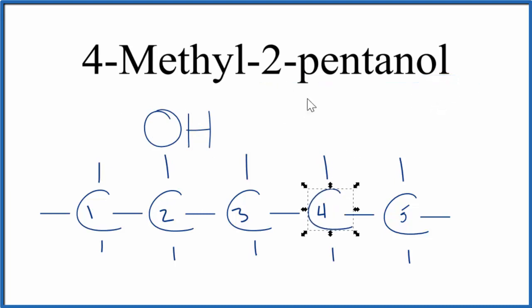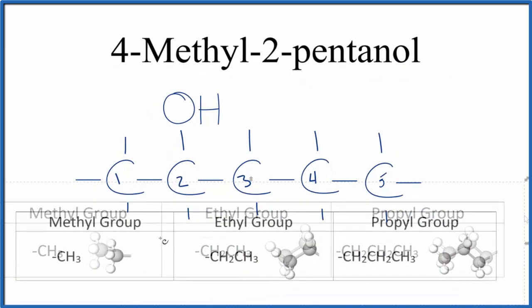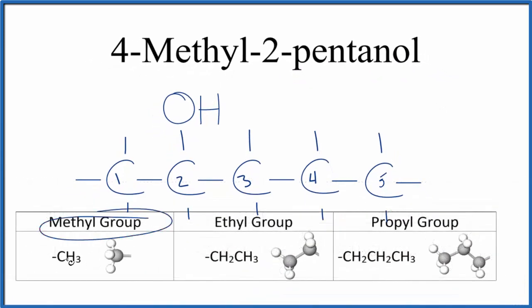On carbon number four right here, we're going to put a methyl group. Methyl groups look like this. For the methyl substituent group, we have CH3. So we're going to attach a carbon with three hydrogens on carbon number four in our 2-pentanol here.